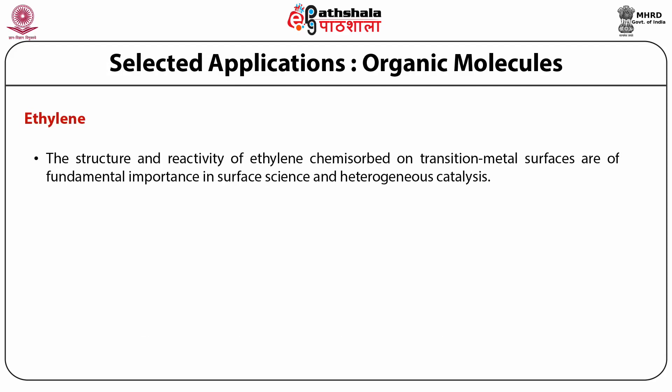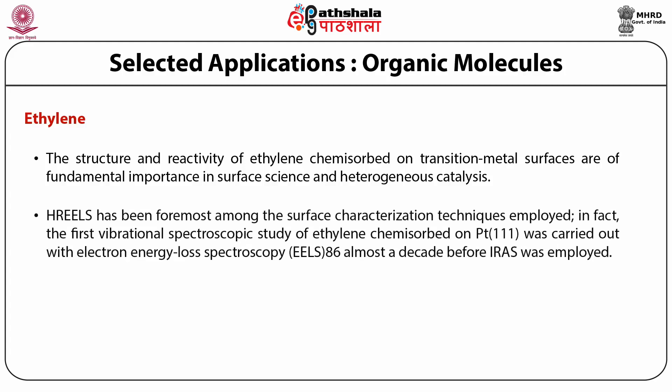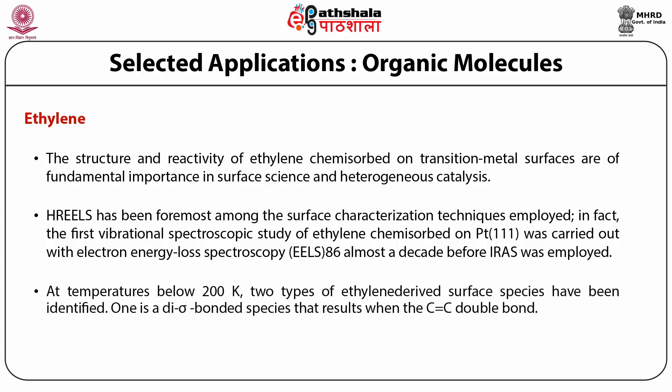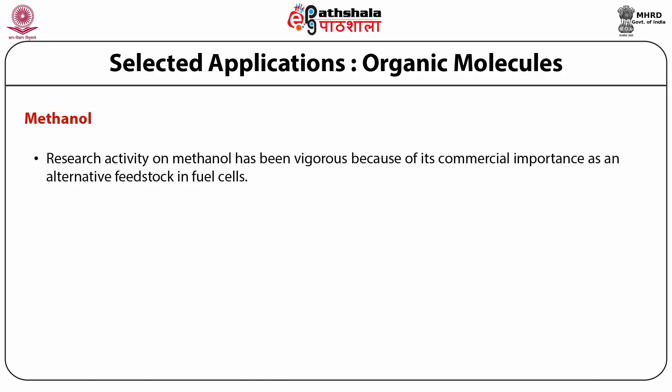Ethylene: the structure and reactivity of ethylene chemisorption on transition metal surfaces are of fundamental importance in surface science and heterogeneous catalysis. HREELS has been foremost among the surface characterization techniques employed. In fact, the first vibrational spectroscopic study of ethylene chemisorption on platinum was carried out with electron energy loss spectroscopy (EELS), almost a decade before IRAS was employed. At temperatures below 200 K, two types of ethylene-derived surface species have been identified: one is a di-sigma bonded species.